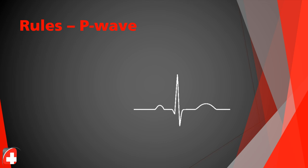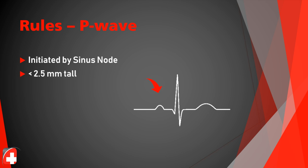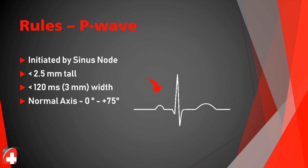Let's talk about the rules for the P wave. For a normal P wave, it's located in front of the large QRS complex and is always initiated by the sinus node — that's a hard rule. It can be up to 2.5 millimeters tall; anything over that suggests atrial enlargement. It's normally 120 milliseconds or less, about 2mm by 2mm on EKG graph paper. The normal axis is between 0 and 75 degrees.